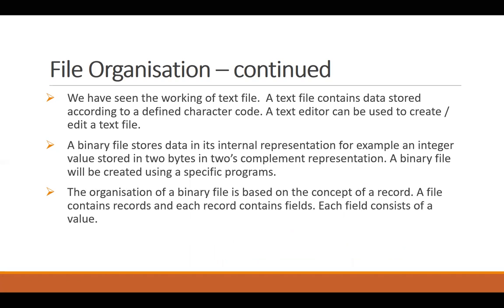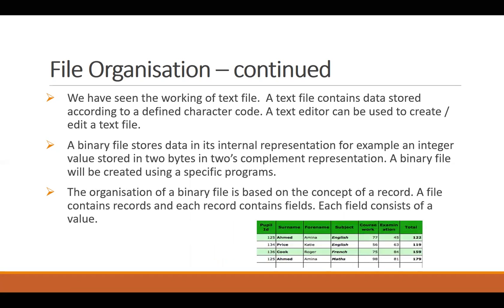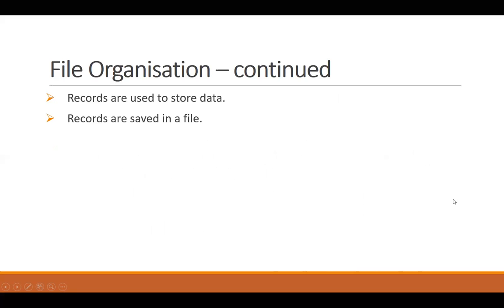The unit of a file is a record. A record comes together based on different fields. A collection of relevant fields makes up a record. As you can see in the diagram, a pupil ID is pointing to a record, and that record is holding several fields in it. Each field holds a unit of information. And all those records come together to make up a file.